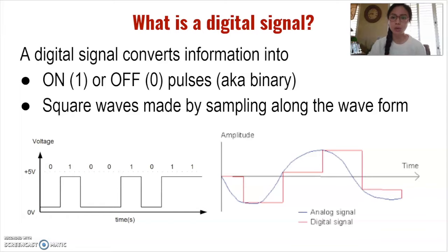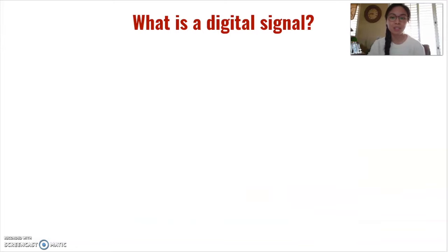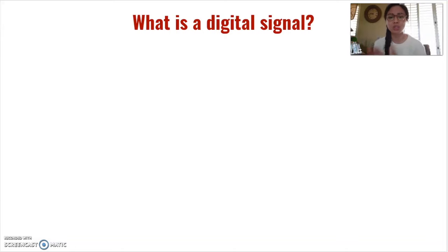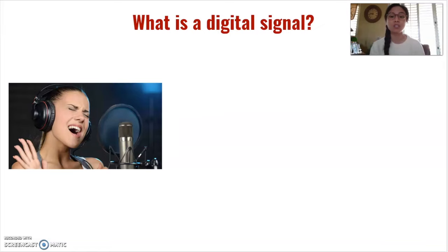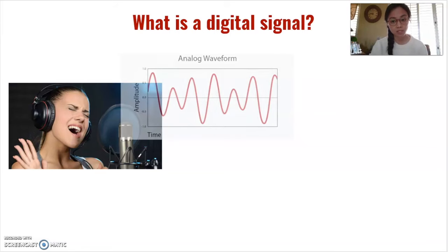The last point is that square waves are made by sampling along the waveform. Let's use the example of music. The product of digital signals is not always just on or off — it's more complex than that. When you listen to an mp3 song, there are different sounds and volumes; it's not simply that there is or is not sound. So how do we get a song recording that becomes an mp3? We start with a singer in a recording studio, and the sounds coming out of the singer's mouth are in analog waveforms.